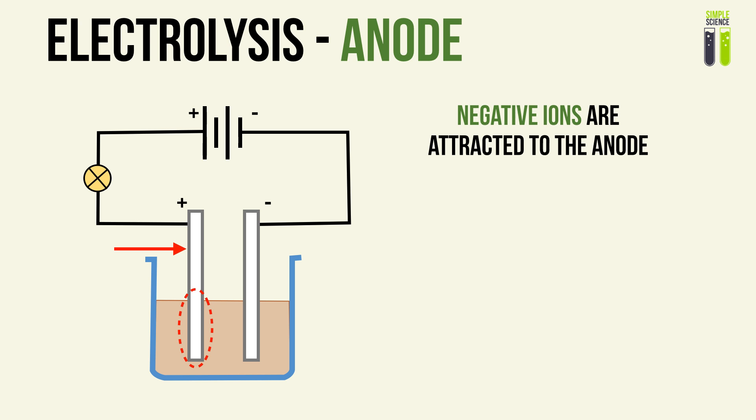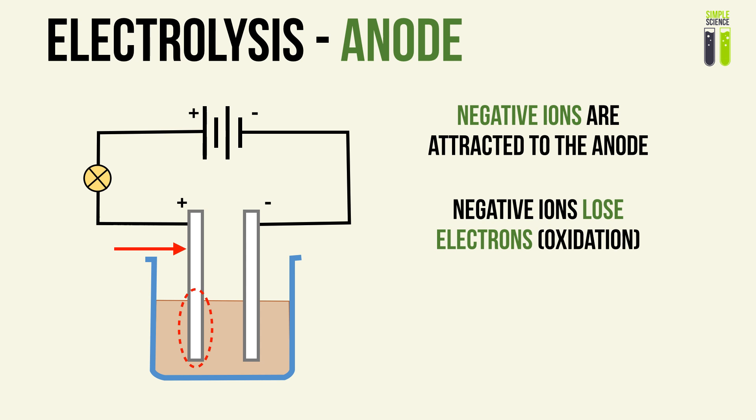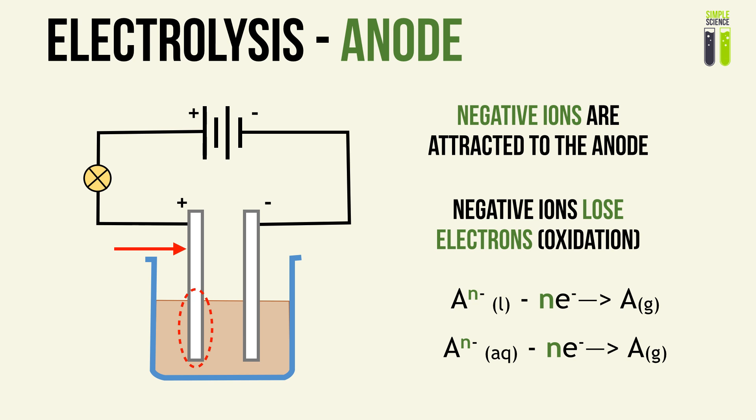At the anode, the negative ions will be attracted to the anode because the anode is positively charged — it is deficient of electrons, so it needs electrons. So your negative ions will give up their electrons. If we denote our negative ions as Aⁿ⁻, our negative ions will lose n electrons in order to form the species at a neutral state. Similarly for the aqueous situation.